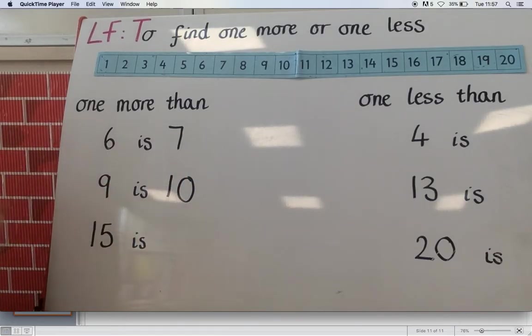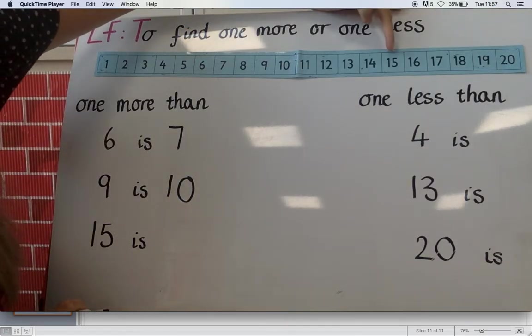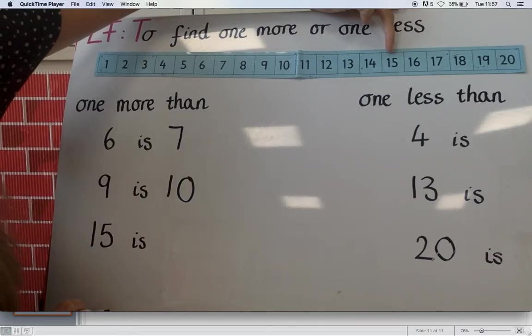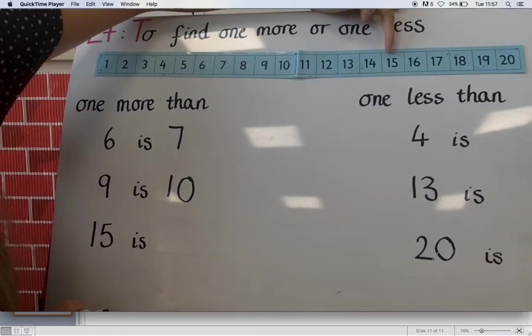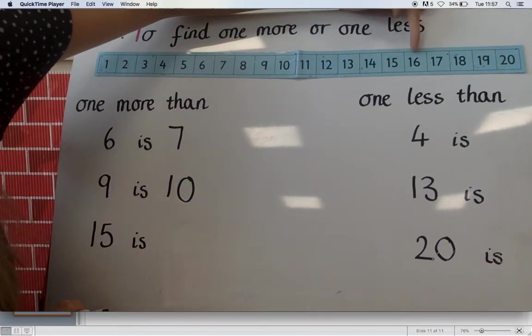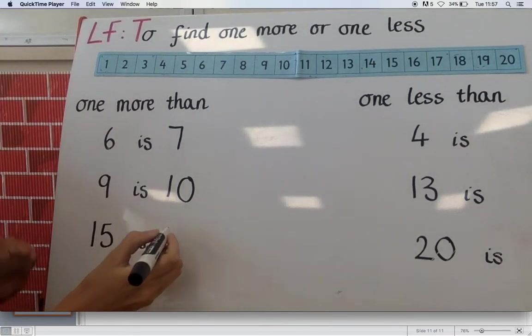And one more than fifteen. So we're getting over the tens now. So find fifteen. Got that on my number line. What's one more than fifteen? Remember which way you're going. Do your jump. Can you tell me one more than fifteen is? Sixteen.